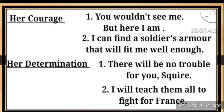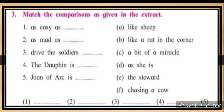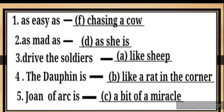Third, match the comparisons as given in the extract: as easy as, as mad as, drive the soldiers, the Dauphin is, Joan of Arc is. Answers — first: as easy as chasing a cow. Second: as mad as she is. Third: drive the soldiers like sheep. Fourth: the Dauphin is like a rat in the corner. Joan of Arc is a bit of a miracle.